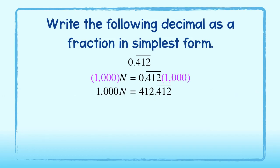Now, let's go ahead and subtract N from both sides. 1000N minus 1N is equal to 999N. Since N is also equal to 0.412 repeating, we will subtract 0.412 repeating from the right-hand side to get 412.